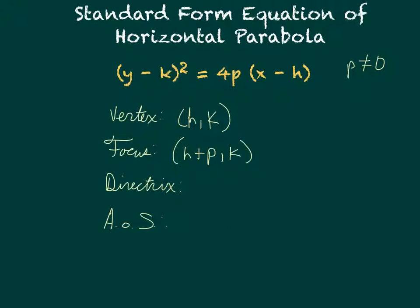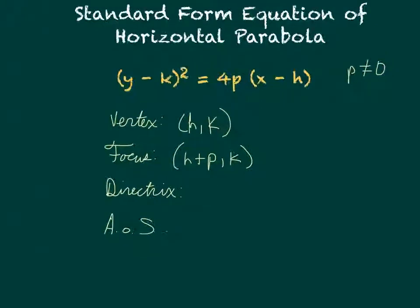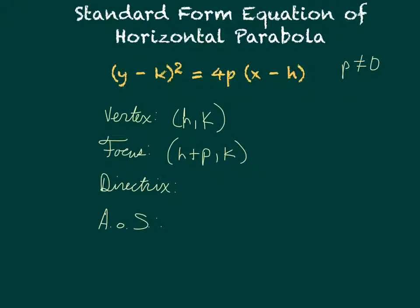Our directrix will have an equation set equal to x, meaning our x is going to change. So we have x = h-p. And finally, the axis of symmetry will be perpendicular to that, which will be y = k.